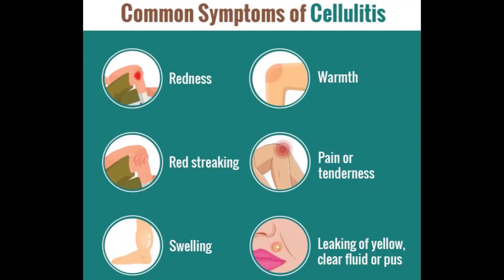Possible signs and symptoms of cellulitis, which usually occur on one side of the body, include a red area of skin that tends to expand, swelling, tenderness, pain, warmth, fever, red spots, blisters, and skin dimpling.